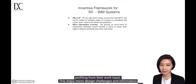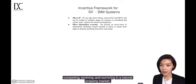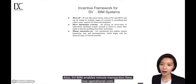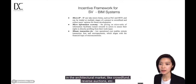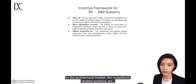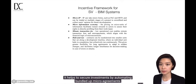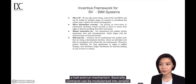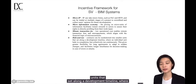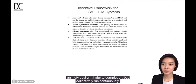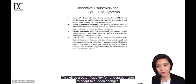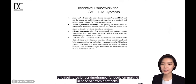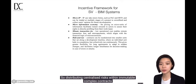This helps micro-design challenges and information to progress into physical architecture by competing, evolving, and surviving in a natural property market. SVBIM enables immediate transaction fees, low operational costs, and micropayments to stimulate alternative forms of investments in the architectural market, like crowdfunding, reverse auctions, etc. It helps to secure investments by automating bundles of micro-agreements that can adapt to real-time data and fluctuations in projects — a halt-and-run mechanism. Contracts can be modularized into smaller units set along a development timeline where an individual unit runs to completion but collectively run continuously, giving greater flexibility for long agreements to adapt to sudden changes and facilitating longer timeframes for decision-making in case of errors and attacks — distributing centralized risks within an immutable complex contract.